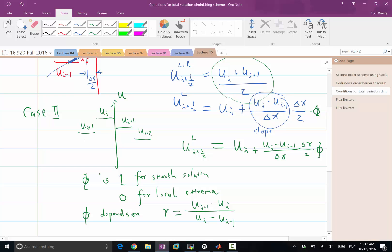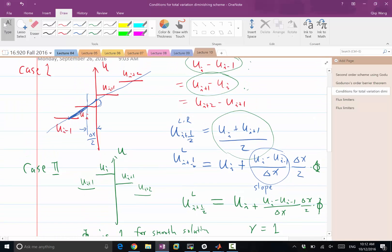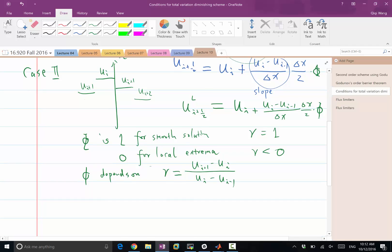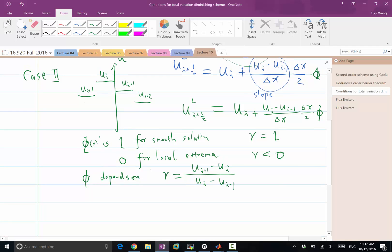So again, this is equal to 1 if R is equal to 1. And for local extrema, either minimum or maximum, R is going to be less than 0. So the flux limiters is this phi of R. And let's figure out what are the conditions that this phi of R has to satisfy in order for us to have a second-order monotonic scheme.